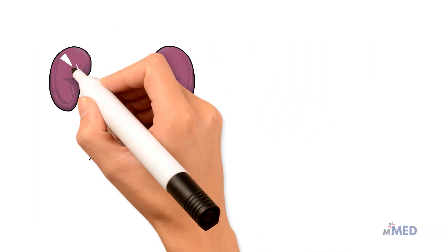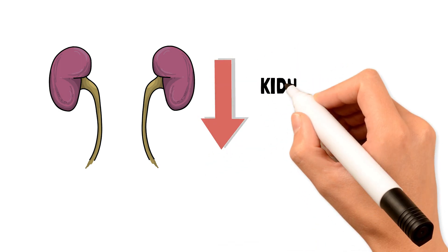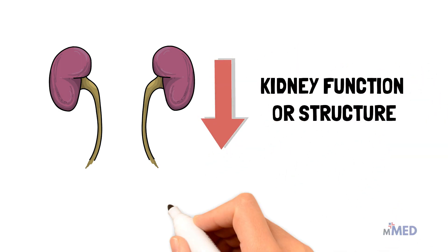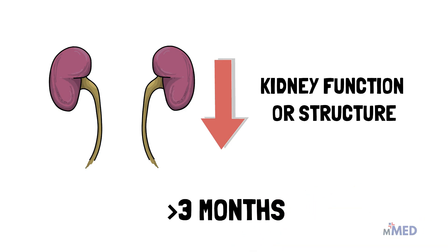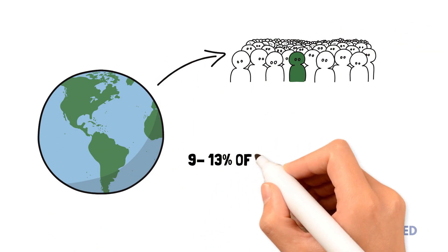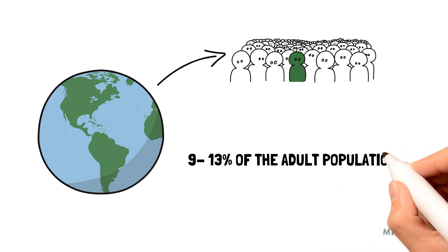CKD, or chronic kidney disease, is defined as abnormal kidney function or structure present for greater than three months with subsequent indications for health. CKD is a common condition estimated to affect about 9 to 13 percent of the adult population worldwide.